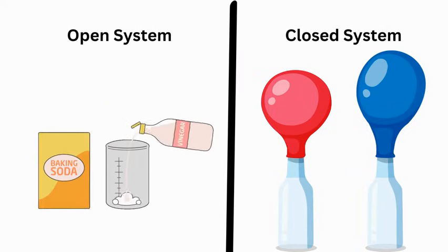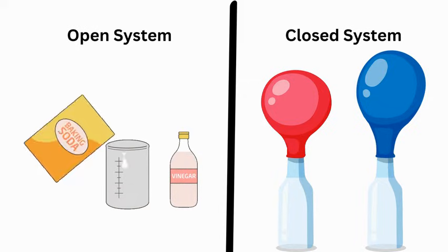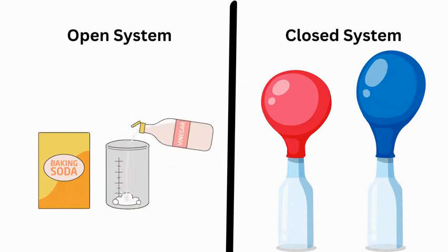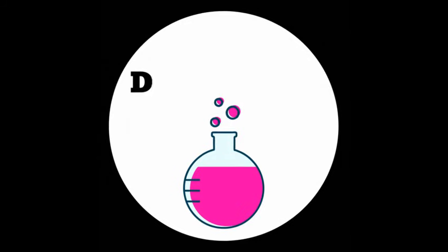In summary, a closed system doesn't exchange matter but can exchange energy with its surroundings, while an open system can exchange matter and energy with its surroundings. These concepts are essential in understanding how systems interact with their environments and undergo changes over time.